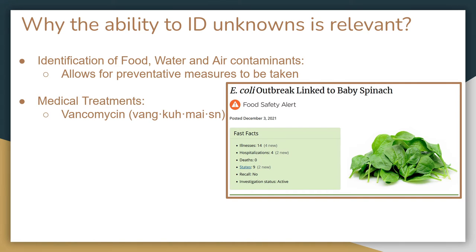It's relevant for a lot of reasons. The ability to test for certain microbes is a matter of public health. As the old adage goes, a gram of prevention is worth a pound of treatment, and to that end, the identification of microbes is essential. For example, the diagnosis of E. coli in several individuals allowed for the linkage between bacteria and baby spinach, leading to a recall as seen on the right.